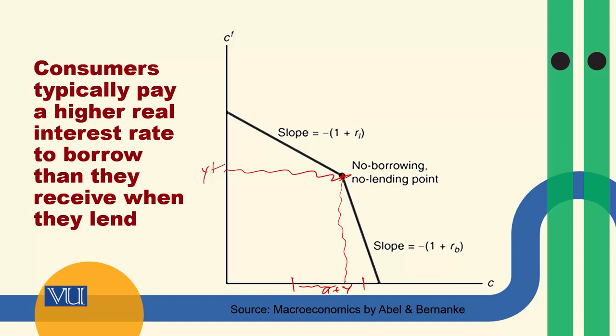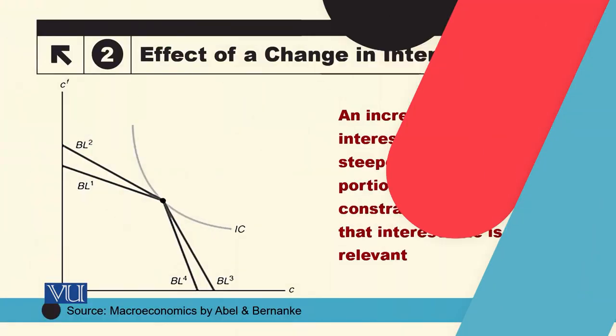اس lending phase میں budget constraint کا slope کم ہے — یہ relatively flatter ہے۔ اور right کی جانب جو portion ہے budget constraint کا، وہ relatively steeper ہے، کیونکہ وہ right والا portion یہ show کرتا ہے کہ وہ borrow کر رہا ہے اور اسے higher interest rate pay کرنا پڑ رہا ہے۔ اس سے آپ کو سمجھ آ گئی ہوگی کہ اگر borrowing اور lending rates different ہوں تو budget constraint میں kink آ جاتا ہے۔